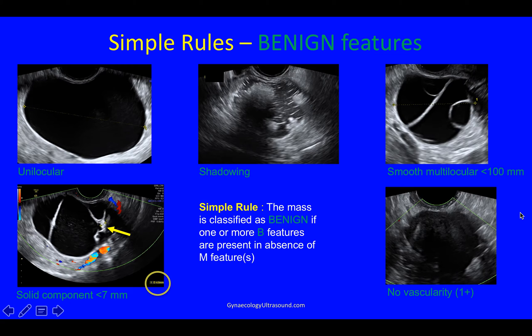The simple rule is that the mass is classified as benign if there are one or more benign features in the absence of any malignant features.